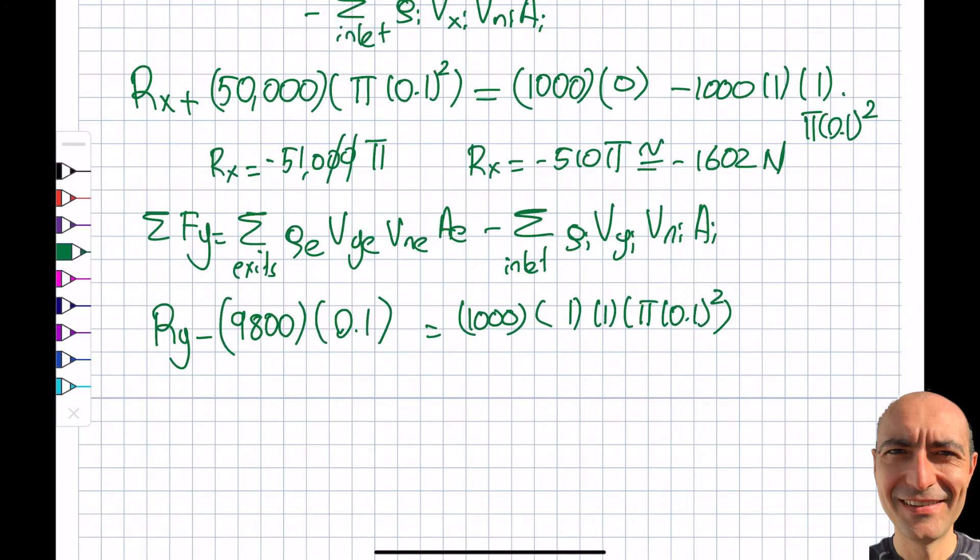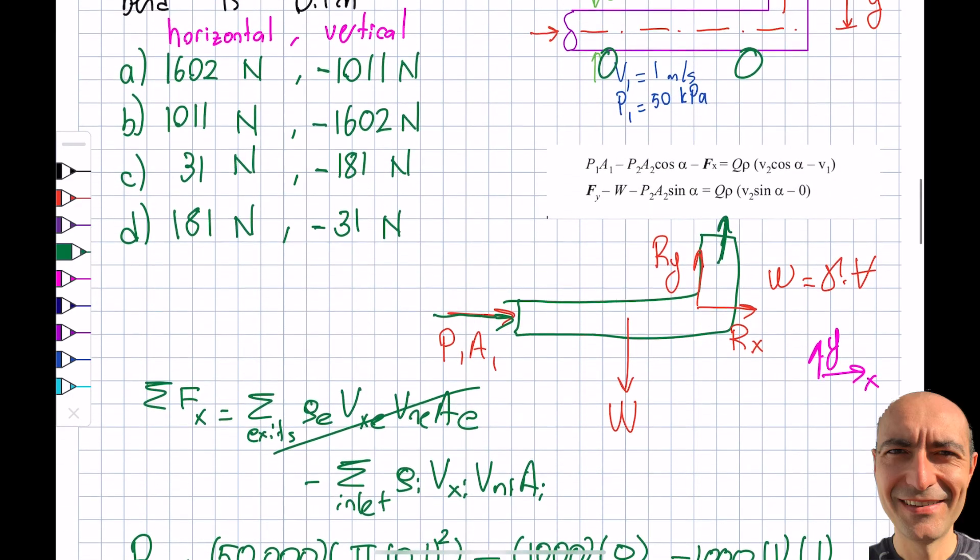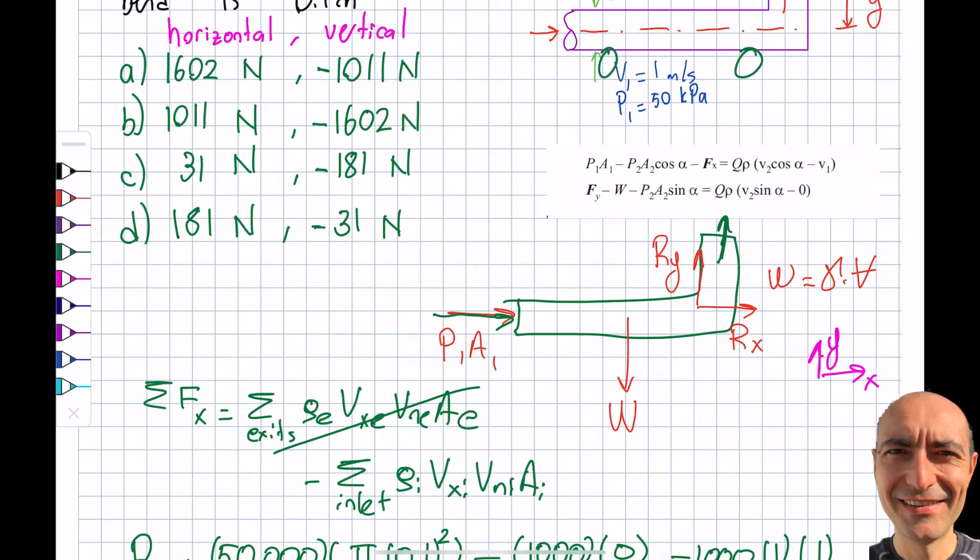So when I write this, I'm going to get myself Ry to be 980 plus 10π. So I should have 1,011 Newtons, because that's what this choice has. So I have a negative sign in front of it. I explained in the Rx part as well.